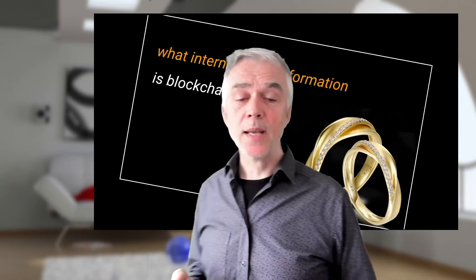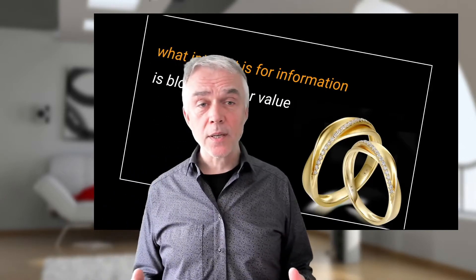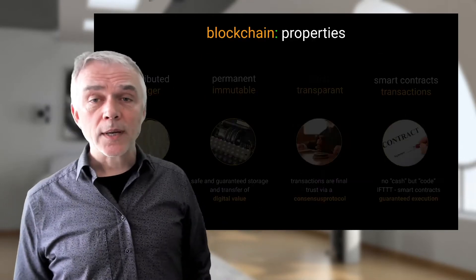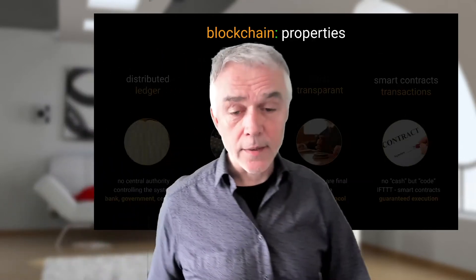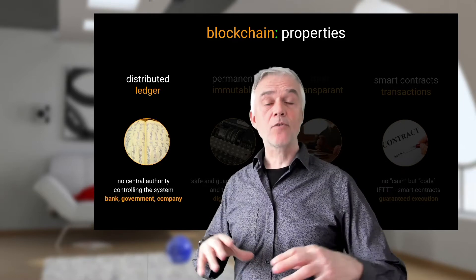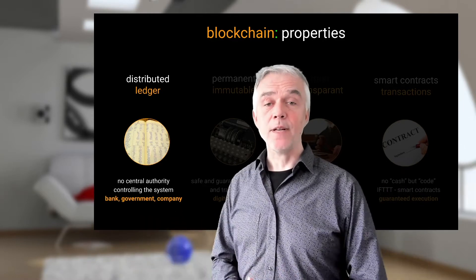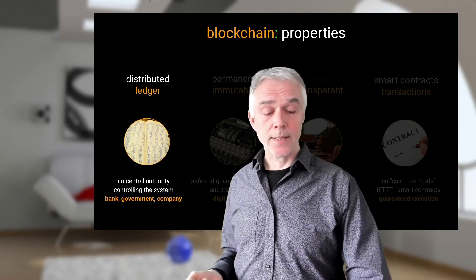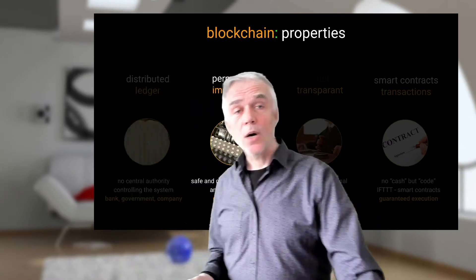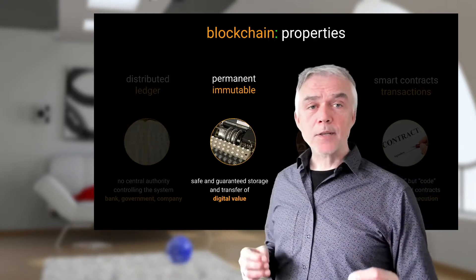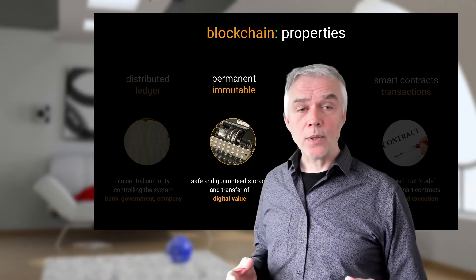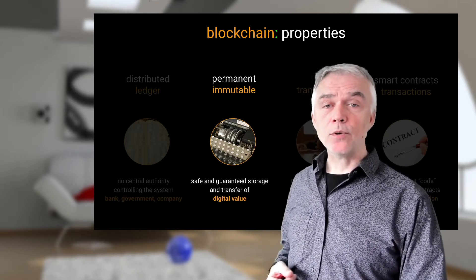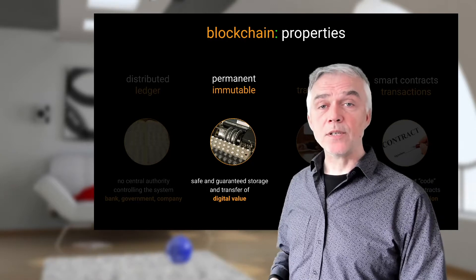What we can say is: what the internet is for information, the blockchain is for value. The blockchain is based on a distributed ledger — there is no central authority or controlling system like a bank, a government, or a company. Also, everything stored in the blockchain is permanent and immutable, so it is a safe and guaranteed storage of digital value that can also be transferred.